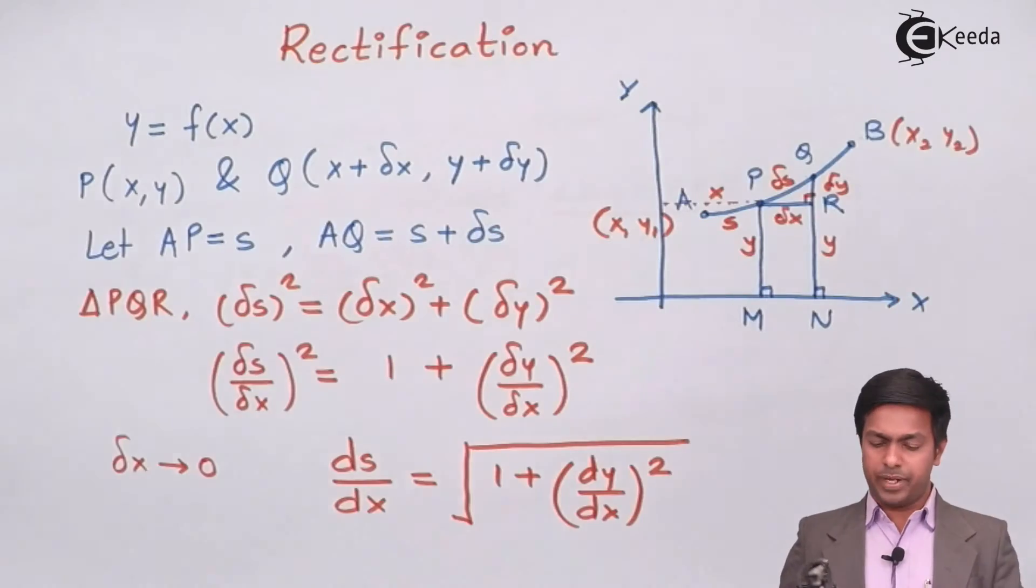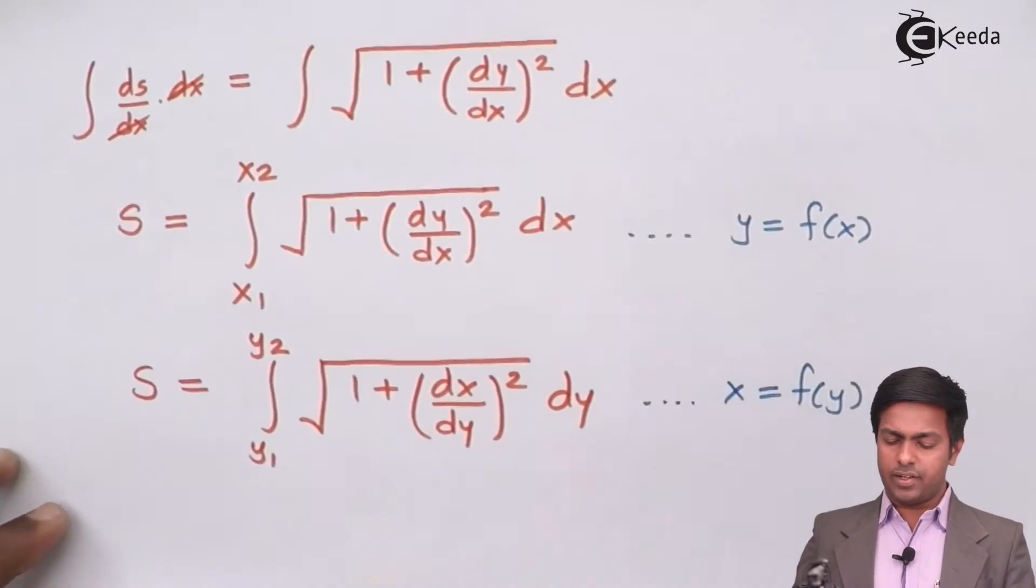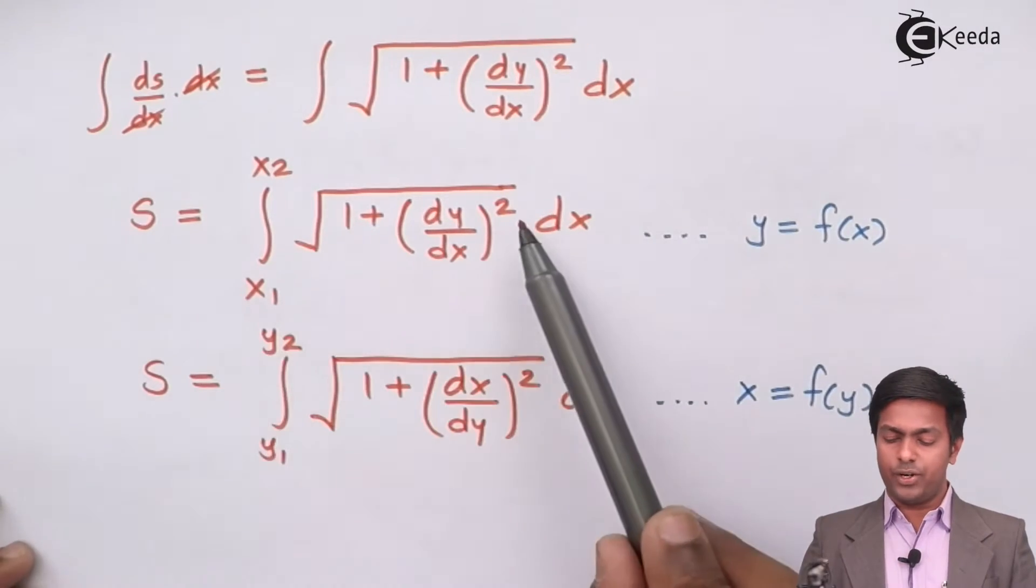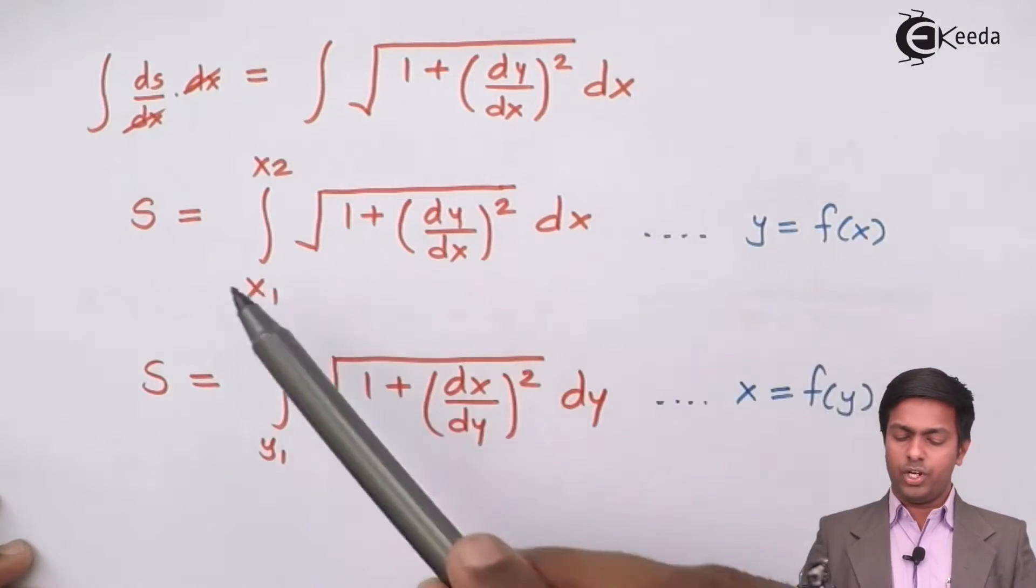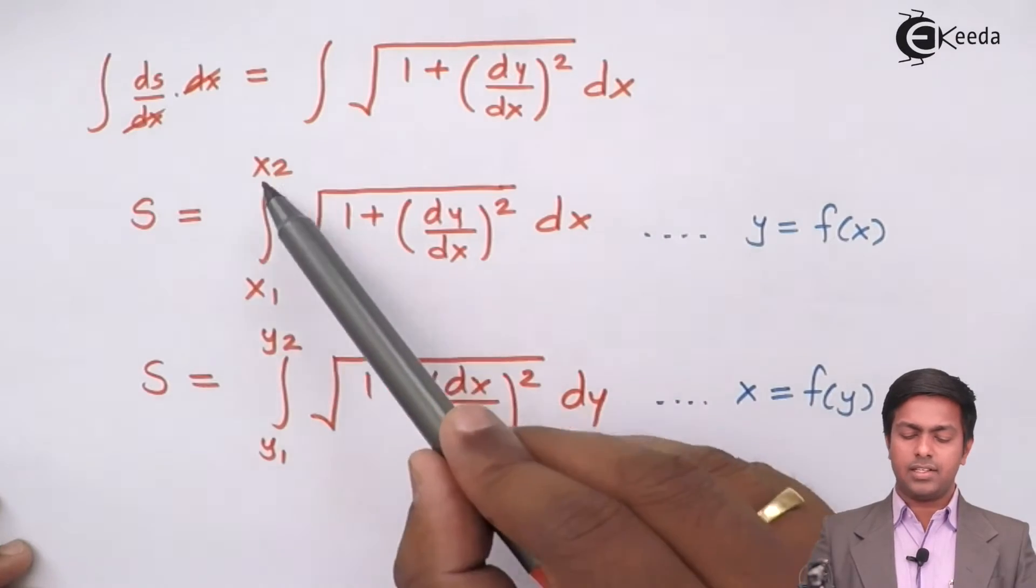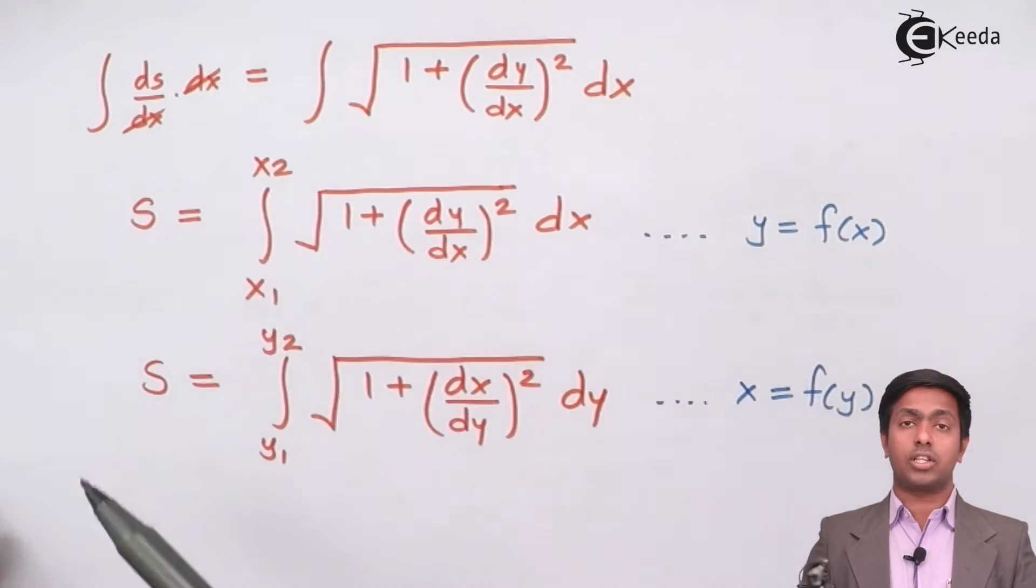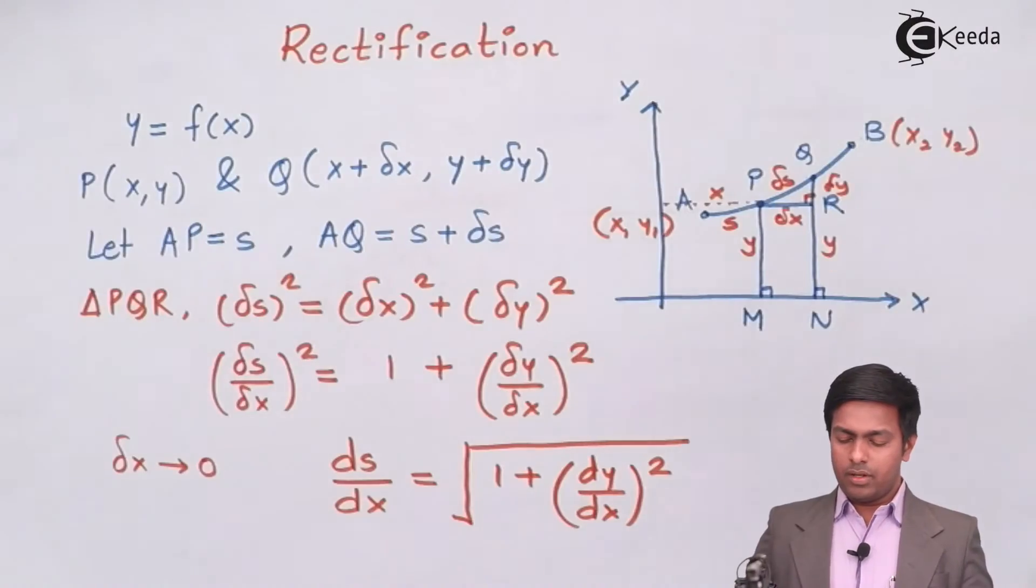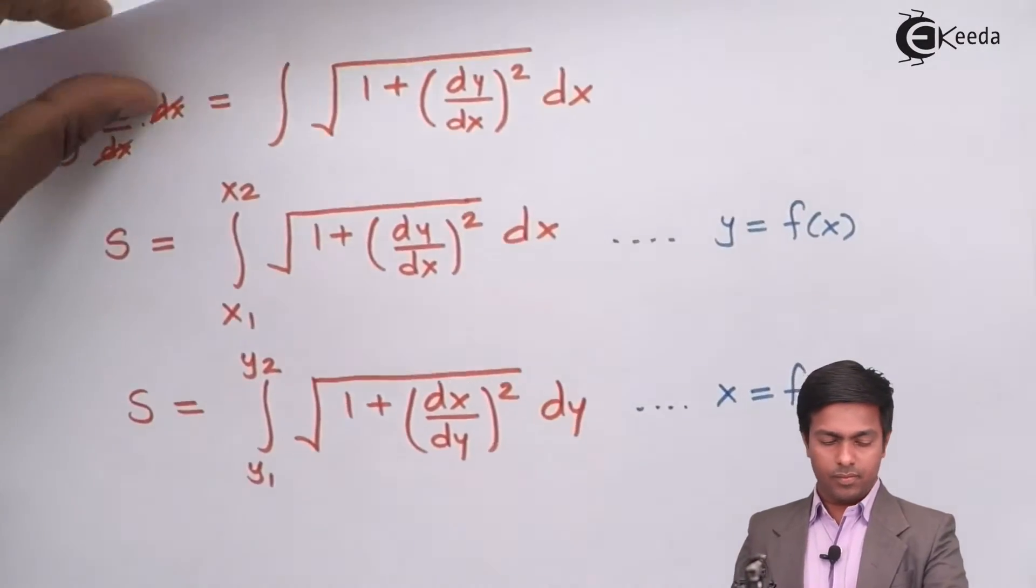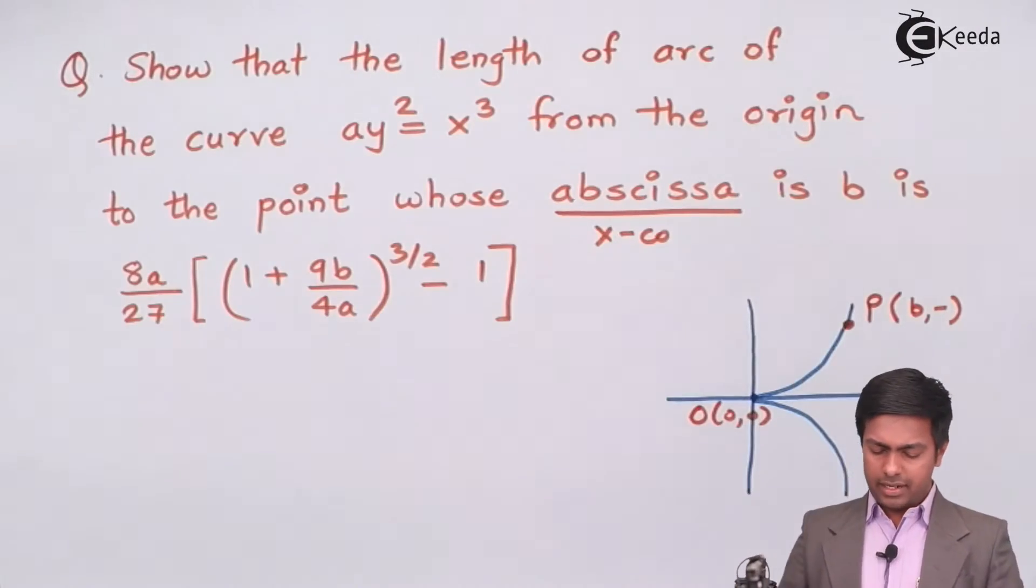I would take the next page. So if this is the formula to find out the length of curve, then y has to be function of x because then only you can take the limits as from x1 to x2 or the x coordinates of the points. So here I will take the x coordinates. So let's start.